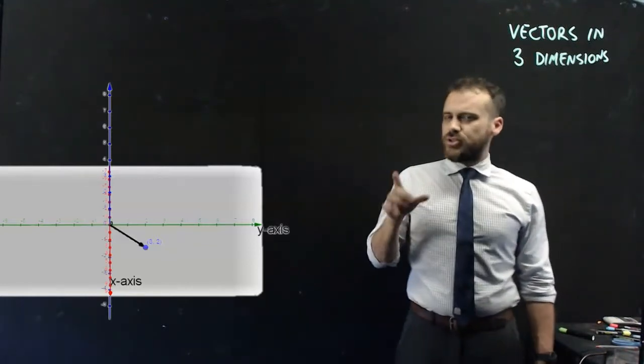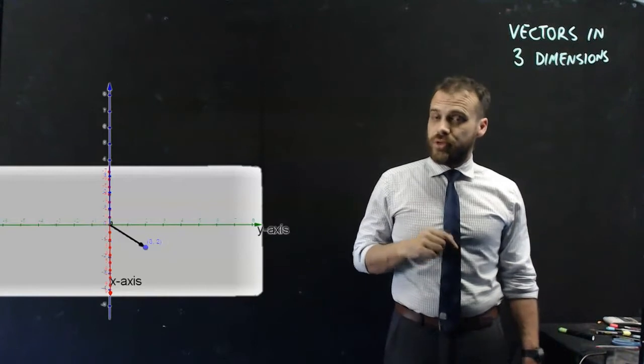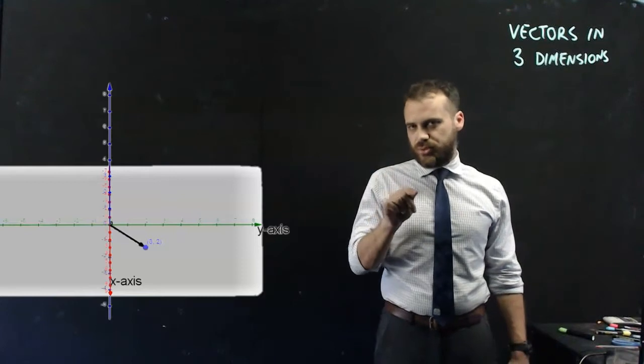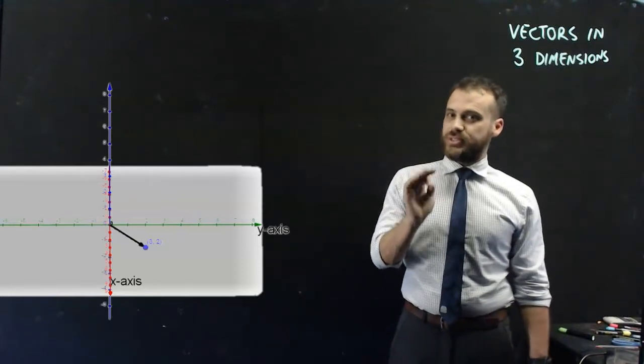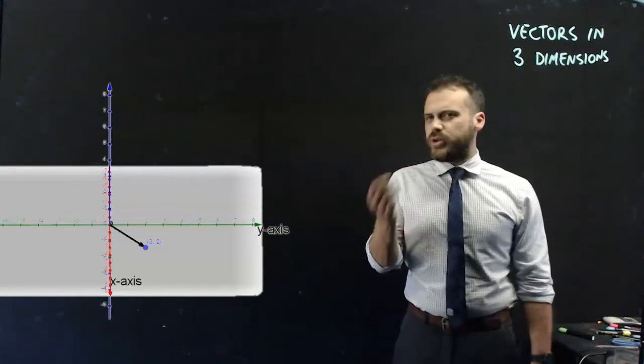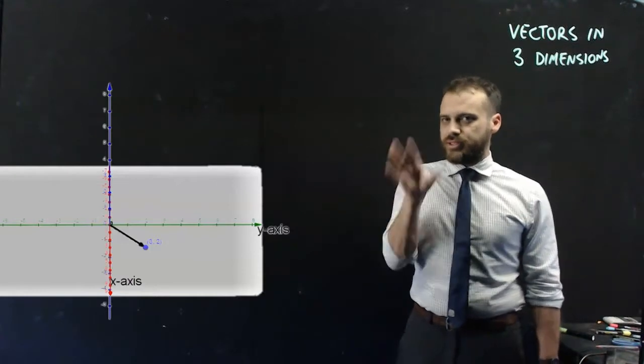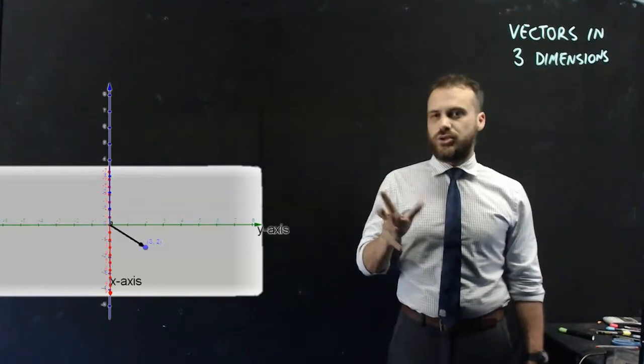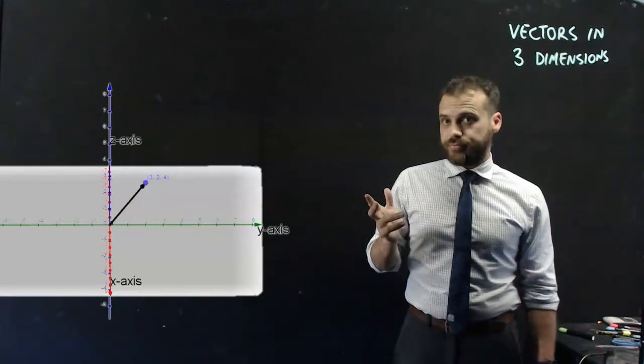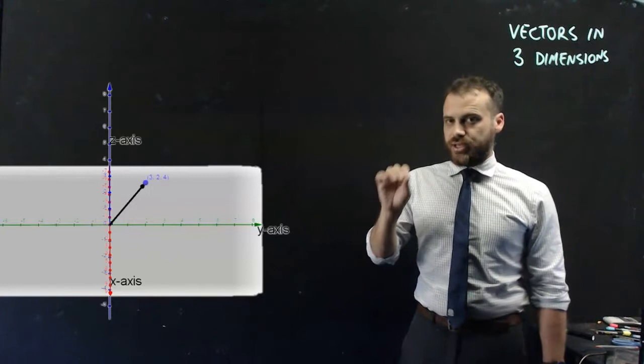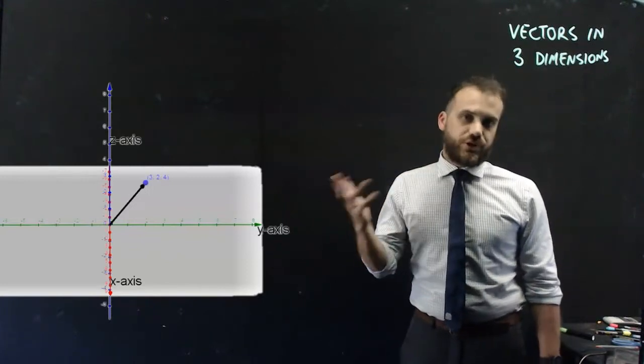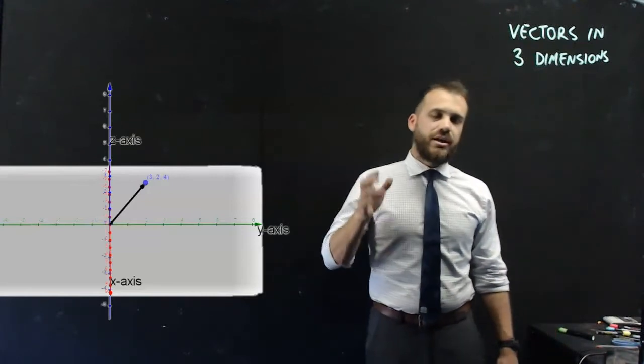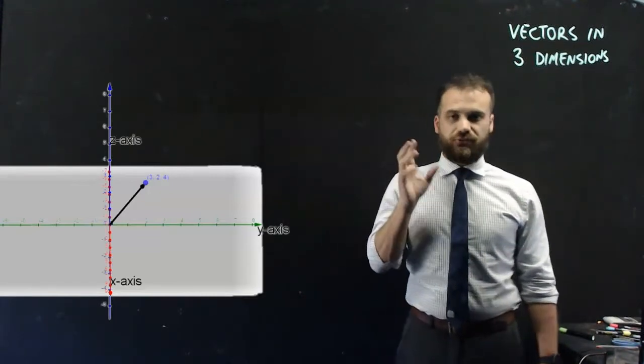And now that's not point 3,2 anymore. That's point 3,2,0. 3 on the x-axis, 2 on the y-axis, and 0 on the z-axis. And now why don't we change that point a little bit. Instead of being 3,2,0, let's move it up a little bit. Let's move it to 3, 2, 4. And that's our new vector, point 3, 2, 4, and position vector 3, 2, 4 as well. That's 3i, 2j, and 4k.